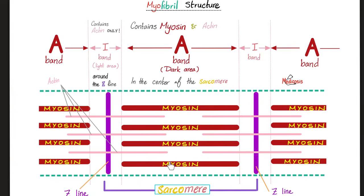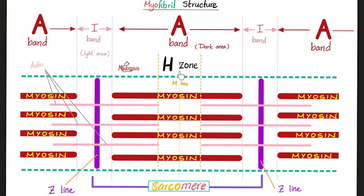Inside the A band, there is a zone which has myosin only but no actin. We call this the H zone, which comes from the German 'Heller,' meaning brighter. In the midline, you have the M line.